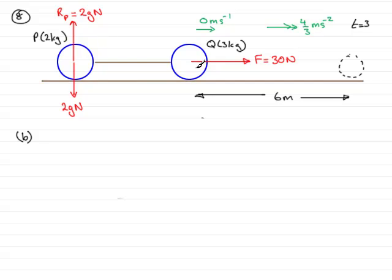The same applies here with Q. We'll have the weight of Q acting downwards, so that's going to be 3g Newtons. And there'll be a reaction upwards, which I'll call RQ. And RQ, because it's on a horizontal plane here, will be equal to the weight, so that'll be 3g Newtons.